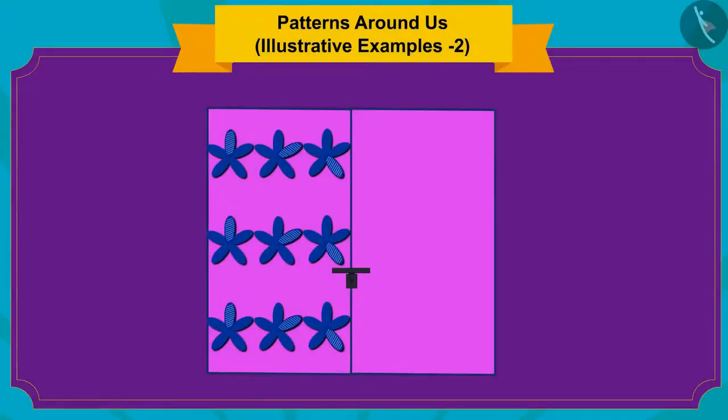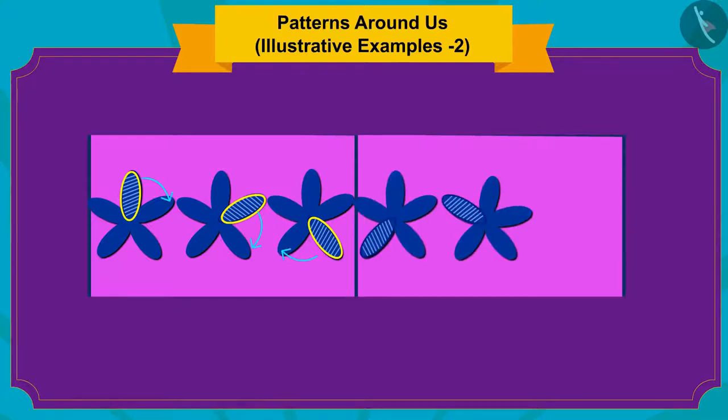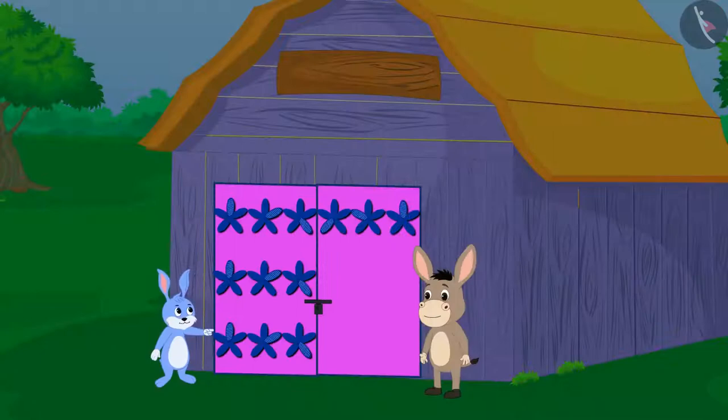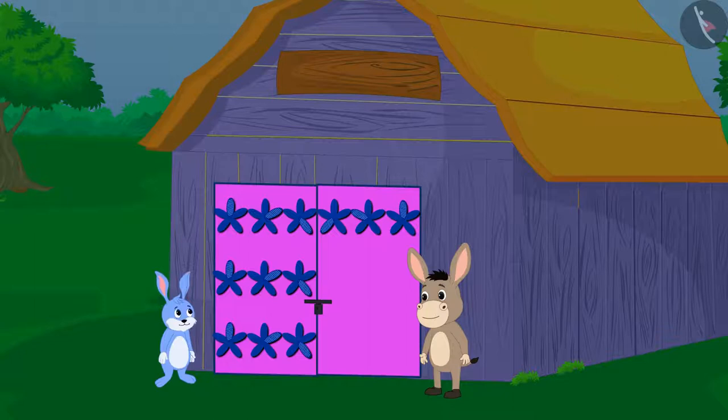Yes! The petal of the flower on which the diagonal design is made here is seen in the petal next to it in the next flower. Just like you did, Bhola and Banni completed the pattern of the second door by finding the rule of this pattern.